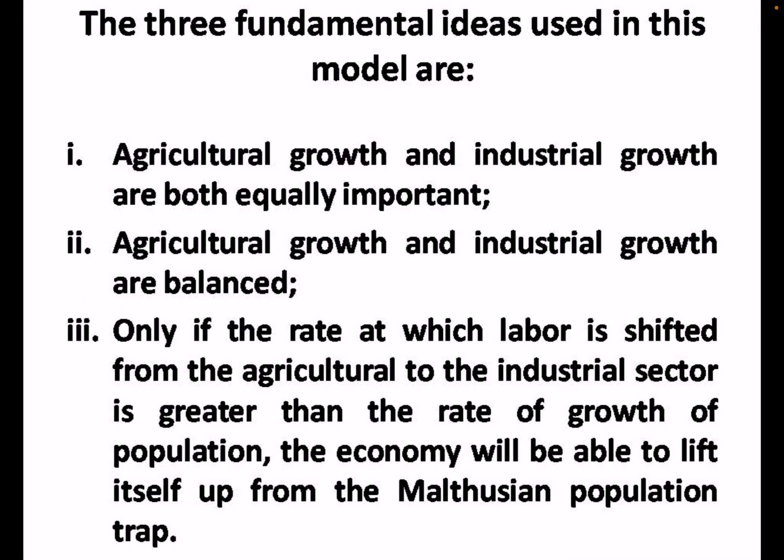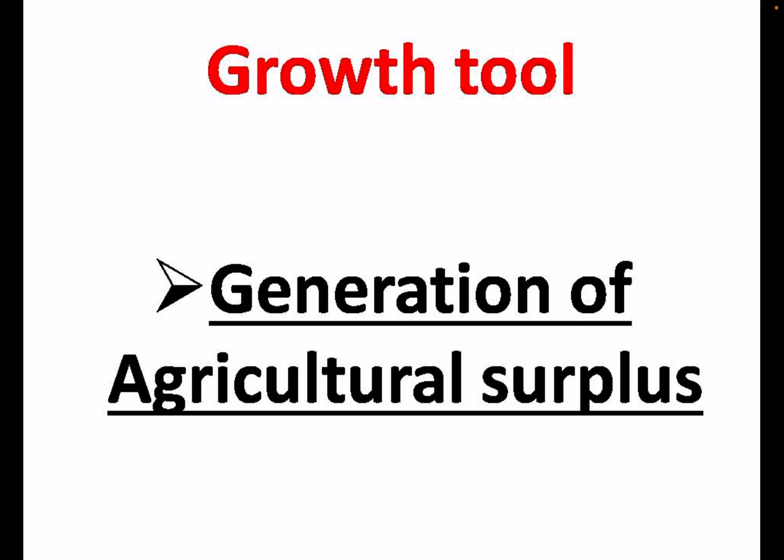Third is the growth rate of population. Now there are three fundamental ideas in this model. First, agriculture growth and industrial growth are both equally important. Second, agriculture growth and industrial growth should be balanced. Third, if the rate at which labour is shifted from agriculture to the industrial sector is more than the rate of growth of population, then the economy will get out of the population trap.